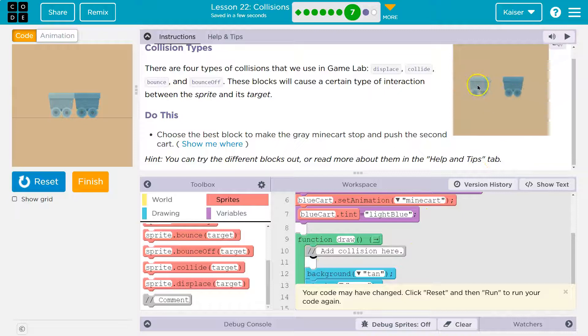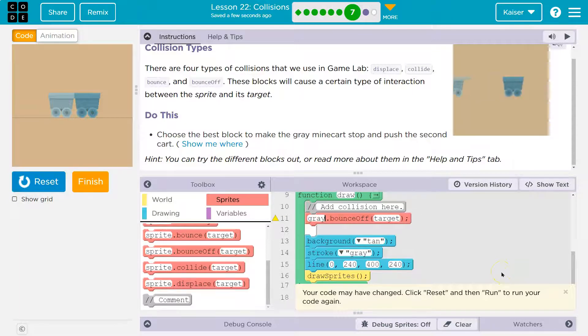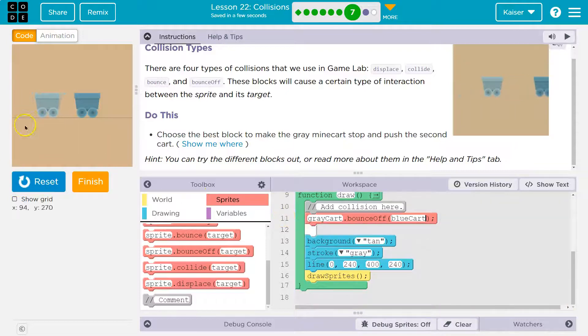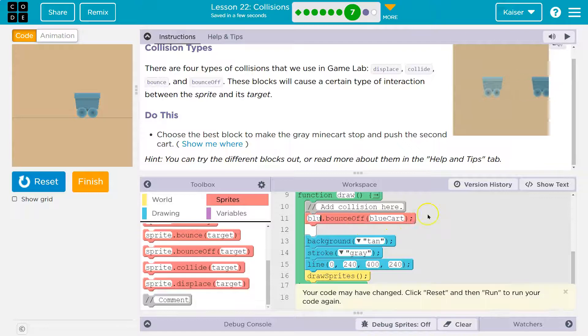We want, when the gray cart hits the blue cart, the blue cart goes flying. So we want the blue cart to bounce off. We need to read this like a sentence. If I do gray cart bounce off blue cart - boom, there goes our gray cart, because we asked the gray cart to bounce off the blue cart.